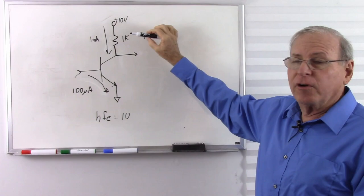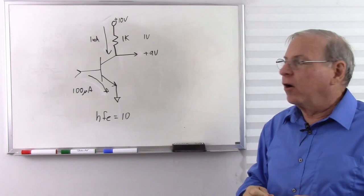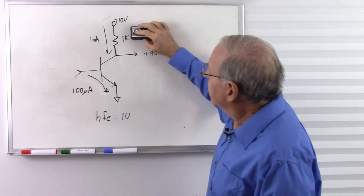So remember Kirchhoff's voltage law, if I start with 10 volts and I lose 1 volt, what do I have left over? 9 volts, easy peasy. That's how the common emitter circuit works.